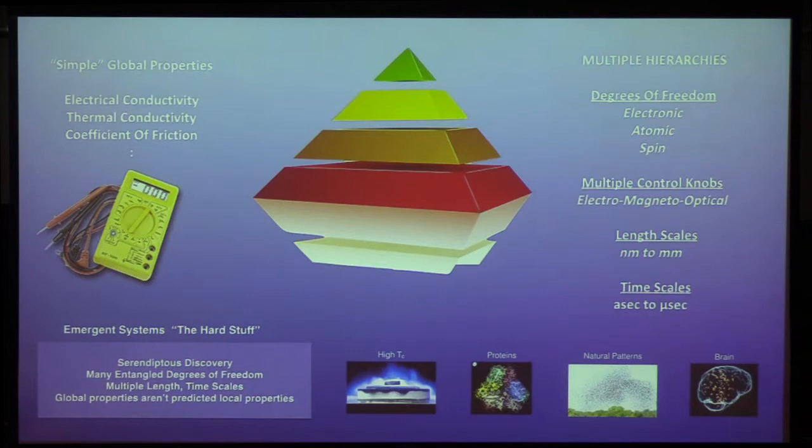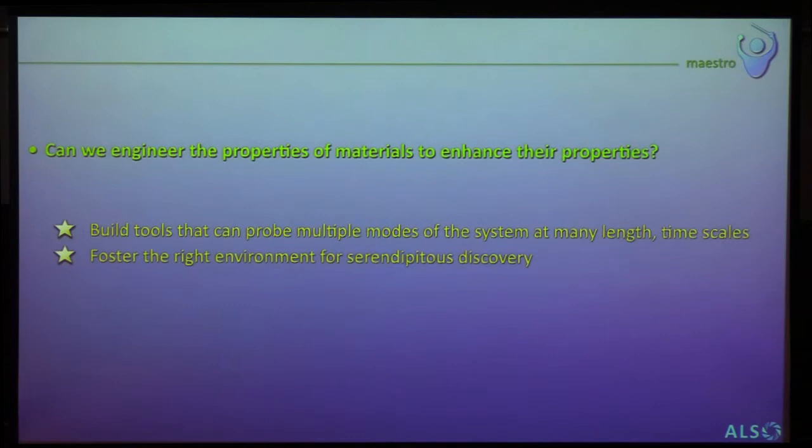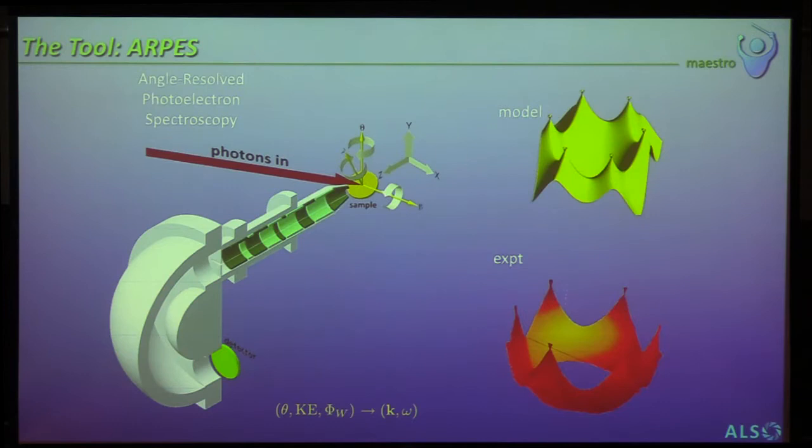But when you find systems that are characterized by serendipitous discovery, like these materials, it's an indication that something can happen that's very difficult to predict. And it happens because of all the entangled degrees of freedom, length, and time scales, and characterized by global properties that can't be predicted by the local properties. A motivation for understanding these materials is because we'd like to engineer them to enhance their properties. We'd love to have a superconductor that works at room temperature, but we don't know how to get there from what we know right now.